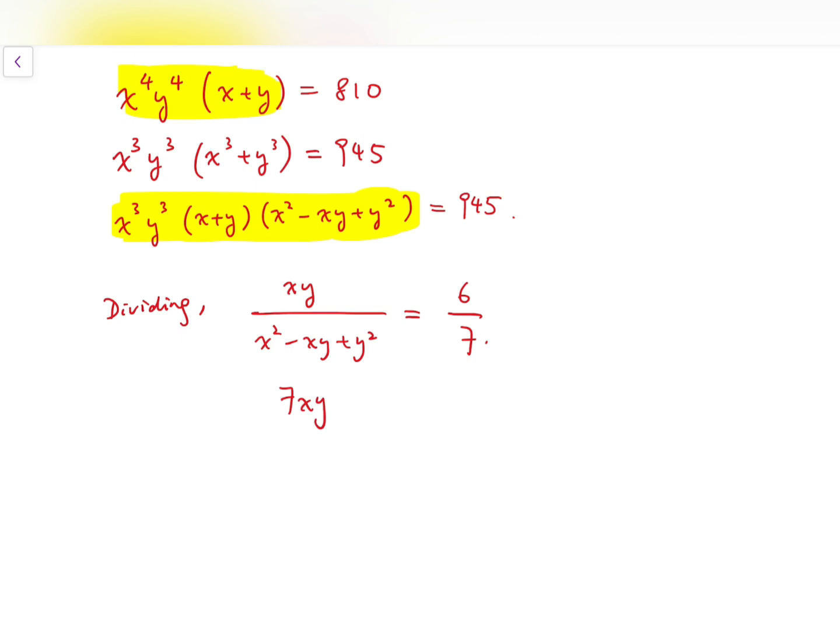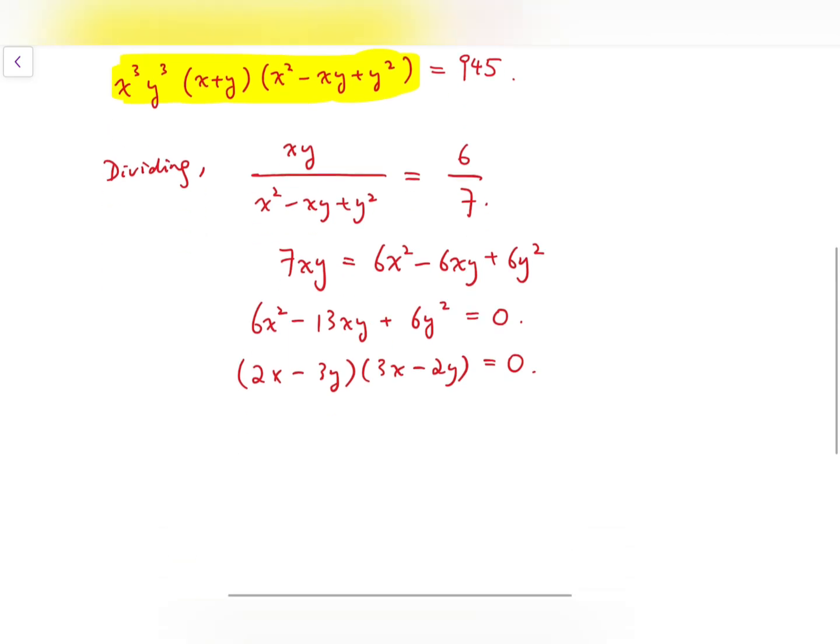So I'm removing all the denominators, and I'll get 6x squared minus 13xy plus 6y squared equals 0. From this, we can factorize: 2x minus 3y times 3x minus 2y equals 0. And so that means I have x over y equal to either 3 over 2 or 2 over 3.